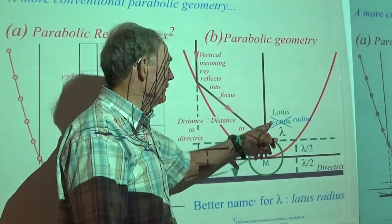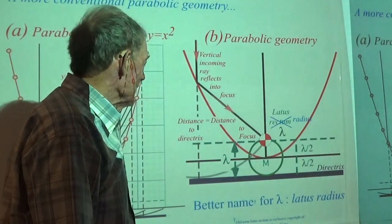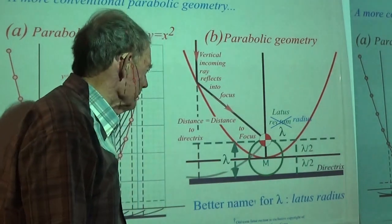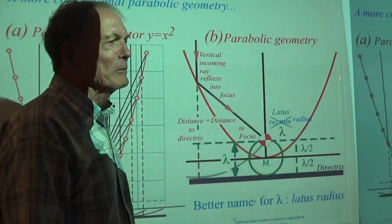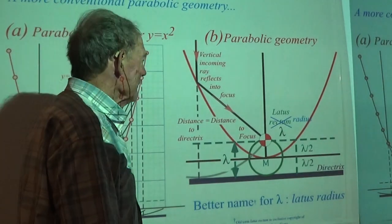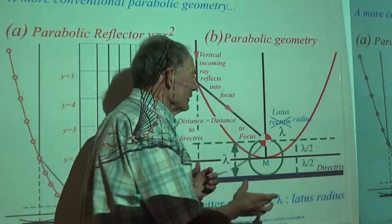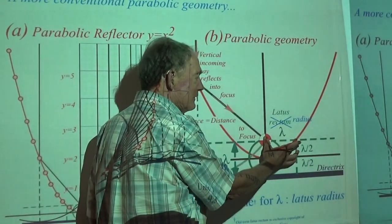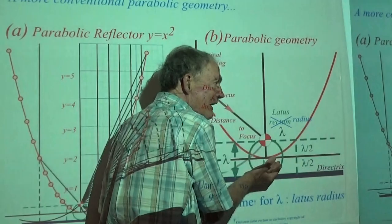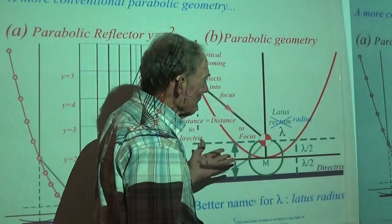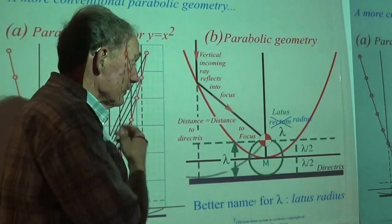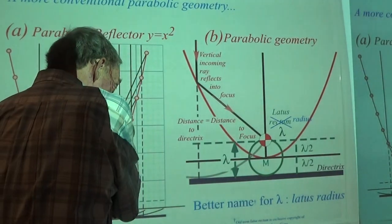You can look at old books and that's what you get. As I say, the old term latus rectum is explicit in those texts. We'll try not to use it anymore. Radius is a good thing, because if this were a circle, that would be the radius. But it's a parabola, so the lattice radius is the name we'll be using.